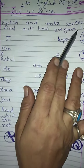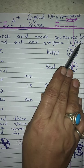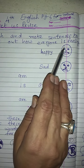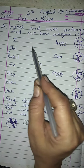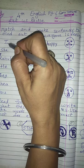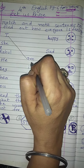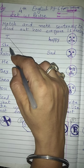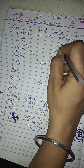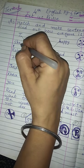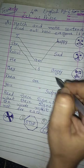Match and make sentences to find out how everyone is feeling. This is 'I'. With 'I' we can match — 'I am happy'. Then with 'she' — 'she is surprised'.